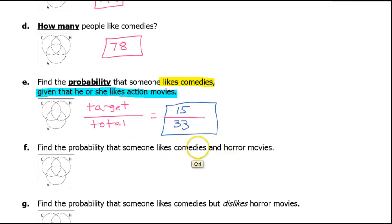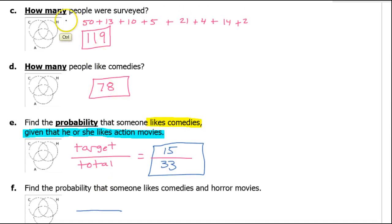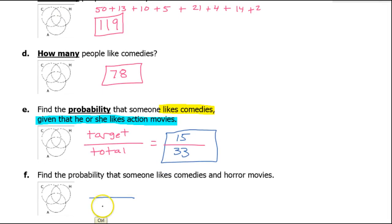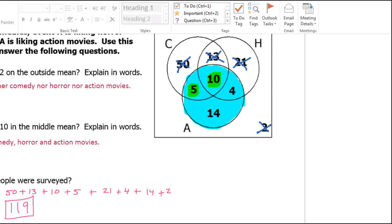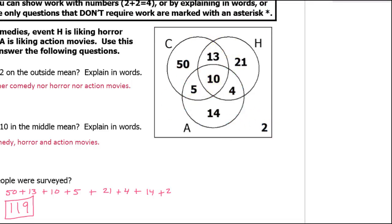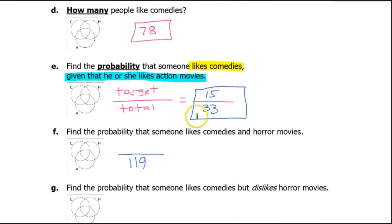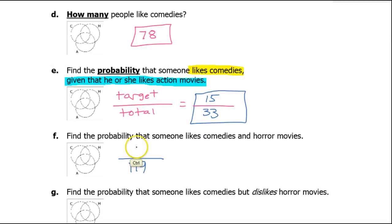Find the probability that someone likes comedies and horror movies. This is not a given problem, so when I do target over total, the total is going to be the original total of people surveyed — that's 119. We're talking about the overlap between comedy and horror. That overlapping part is the 13 and the 10, which is 23. So target over total is 23 out of 119.